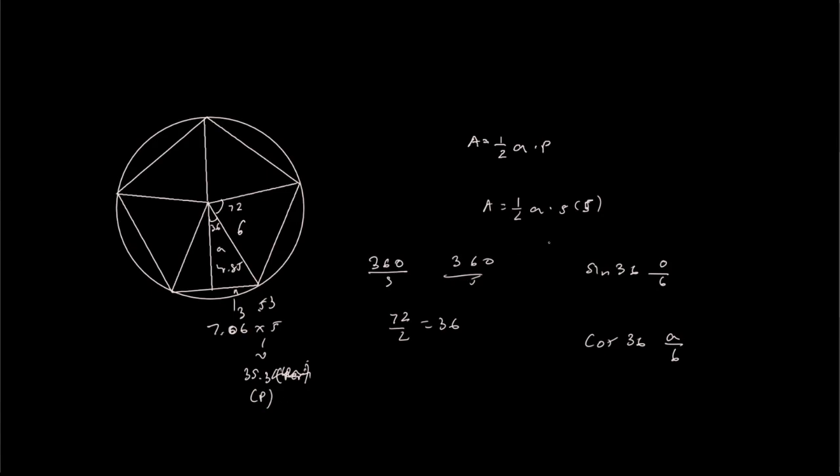So now we can input all our values into this. So area equals 1/2 times the apothem of 4.85 times 35.3. And if we were to multiply this out, 4.85 times 35.3 divided by 2, we get a value of 85.6. So our area is 85.6.